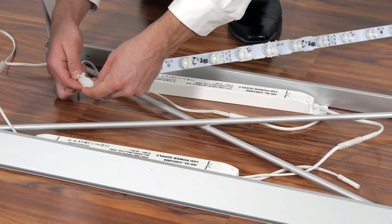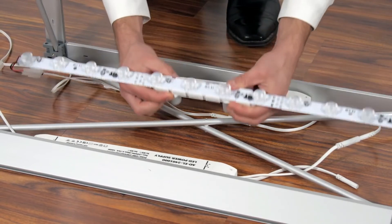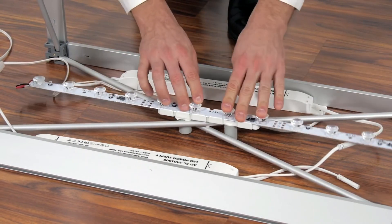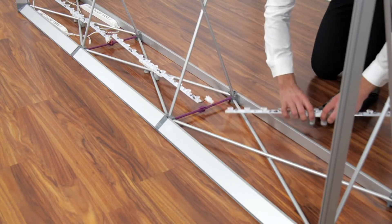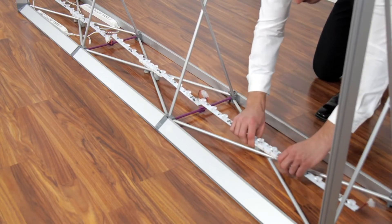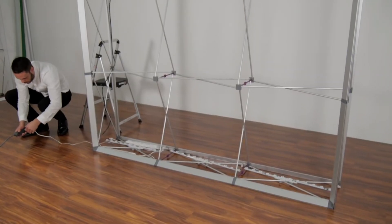For kits with two power supplies, attach the extension cord from the top row of lights to first power supply. Then attach the bottom row of lights to the second power supply. Next, attach the first power supply directly to the second power supply. Then finally, attach the power cord to the second power supply.